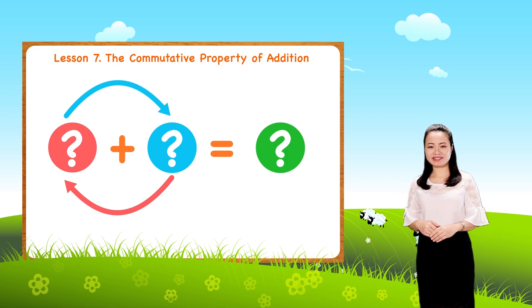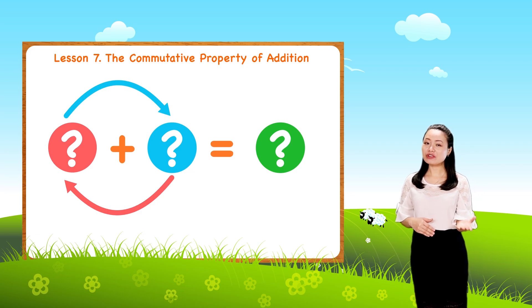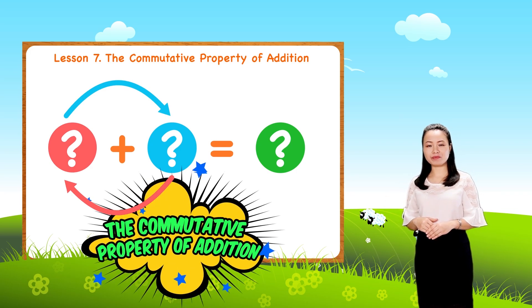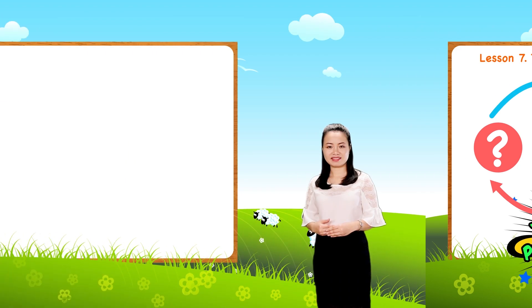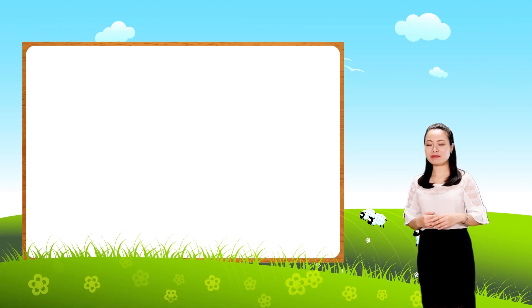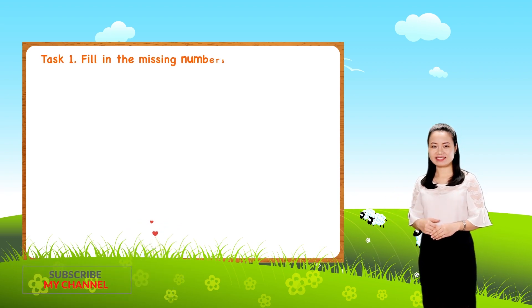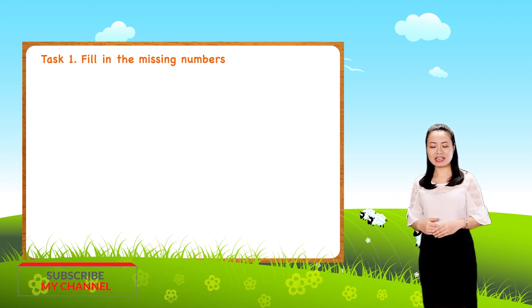So now you know the commutative property of addition. Let's have some practice. Task 1: Fill in the missing numbers.